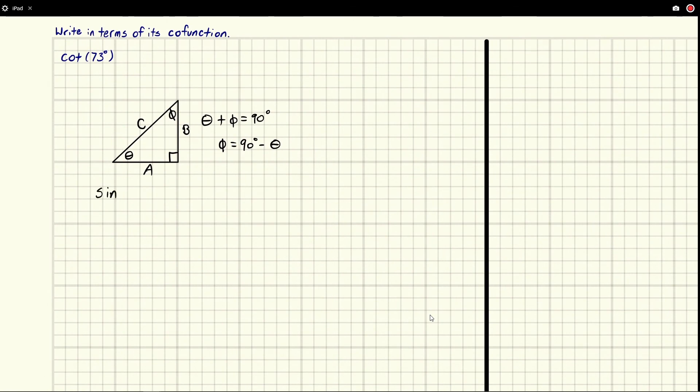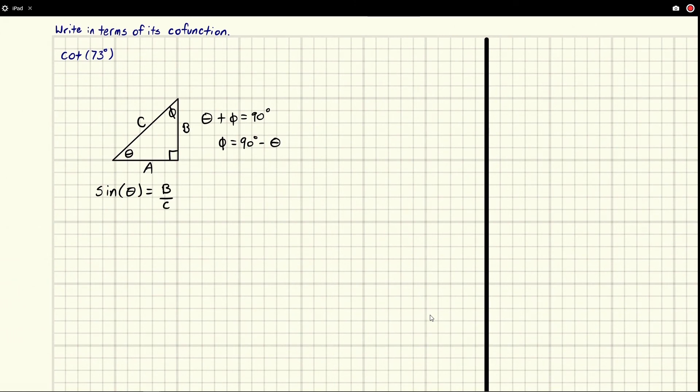So if I had sine of theta, that's going to be B over C. Now I can also describe the angle phi with B over C; it's just adjacent. So if I wanted to, I could say cosine of phi, and I'm choosing cosine because I want to use this adjacent side, is equal to B over C. And we see that they turn out to be equal to each other.